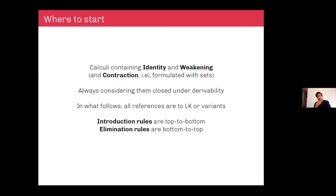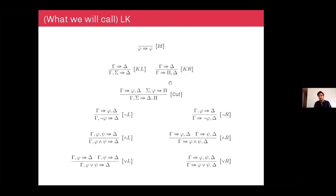When I talk about introduction rules I will mean the top-to-bottom reading of the rules I'm going to present. When I refer to elimination rules I will be referring to the bottom-to-top readings of the same rules. So we have identity, weakening, cut, and rules for negation, conjunction, and disjunction. A lot of variations could be fine — conditionals, other connectives — but this is the signature I'm going to work with.